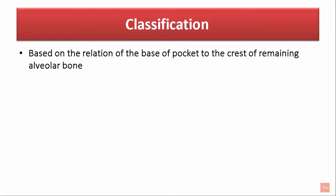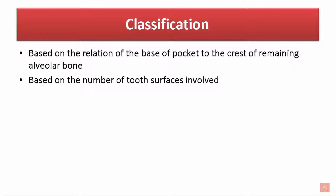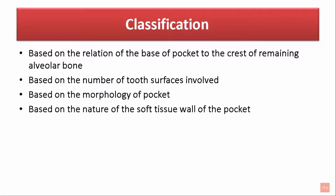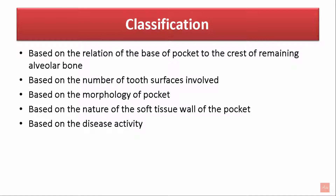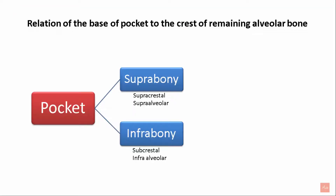Periodontal pockets can be classified based on the relation of the base of the pocket to the crest of the remaining alveolar bone, based on the number of tooth surfaces involved, based on the morphology of the periodontal pocket, based on the nature of the soft tissue wall of the pocket, and based on the disease activity. Depending on the relation of the base of the pocket to the crest of the remaining alveolar bone, pockets can be classified as suprabony or infrabony.